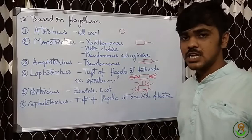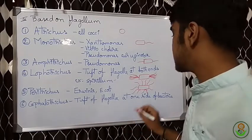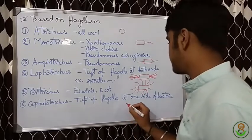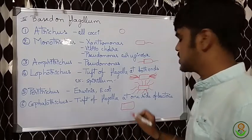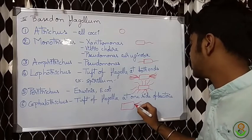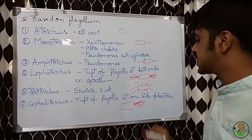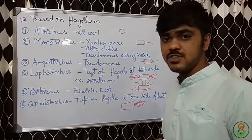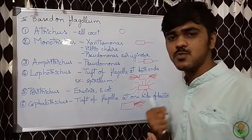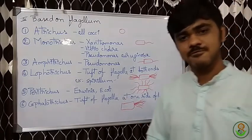The final type is cephalotrichous, which contains a tuft of flagella at one end only. Because a tuft of flagella is present, it has more energy for movement and can move in one direction with more force. That is the importance of the flagellum in bacterial movement.